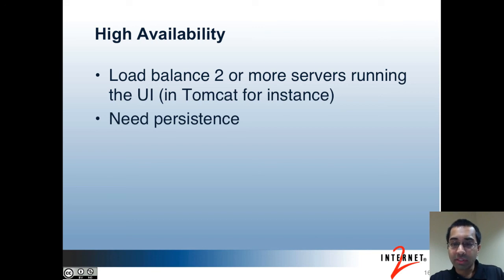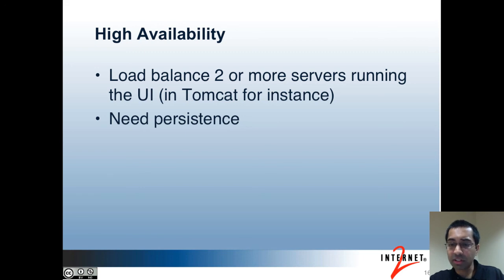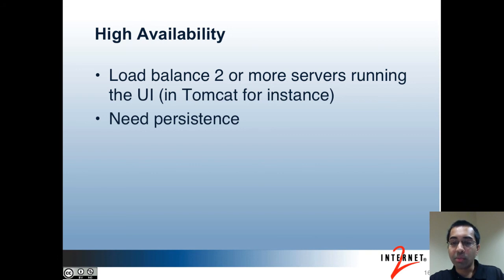To deploy the Grouper UI in high availability, you'd want to have two or more servers running the Grouper UI in Tomcat, for instance. You can set up load balancing between the servers, which should be okay as long as you have persistence set up. After a user makes the first request to a backend server through the load balancer, you'd want to make sure that all further requests by that user continue to go to the same backend server.